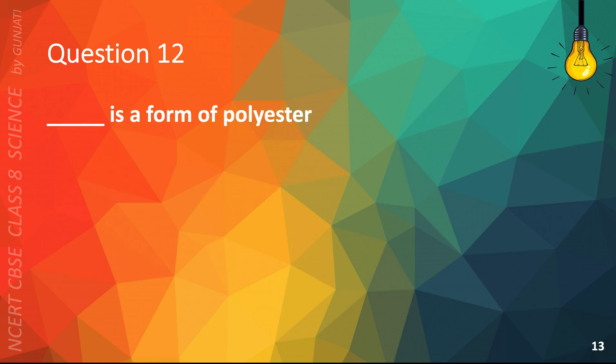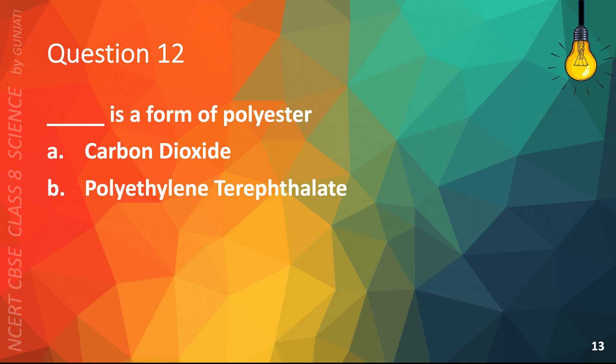Question 12. Blank is a form of polyester. A. Carbon Dioxide, B. Polyethylene Terephthalate, C. Acrylic, or D. Water. The correct answer is B. Polyethylene Terephthalate.